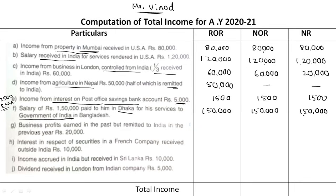Point G: Business profit earned in the past but remitted to India in the current previous year. Since this is past income remitted in the current previous year, it is exempted in all three cases — ROR, NOR, and NR.